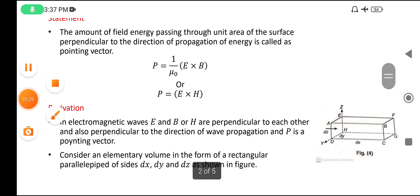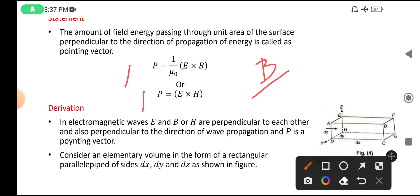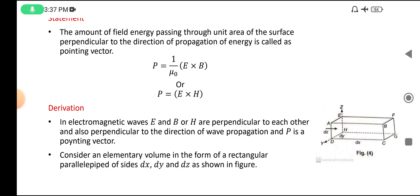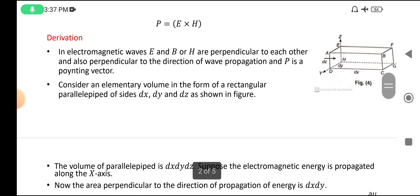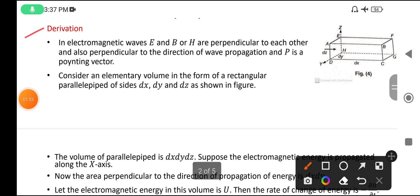The Poynting vector is denoted by P. The formula is: P equals (1/μ₀)(E × B), or P equals E × H, because B/μ₀ equals H. That is why if you write μ₀ here, it becomes H. Next, let me start the derivation.